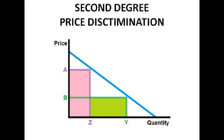Second degree price discrimination — the important one you need to know — is when the discriminating firm charges separate prices to different customer groups. For example, age: children and adults. So we might charge adults price A and children price B. So different prices for different blocks of consumption — it's not each individual consumer, it's each consumer group.